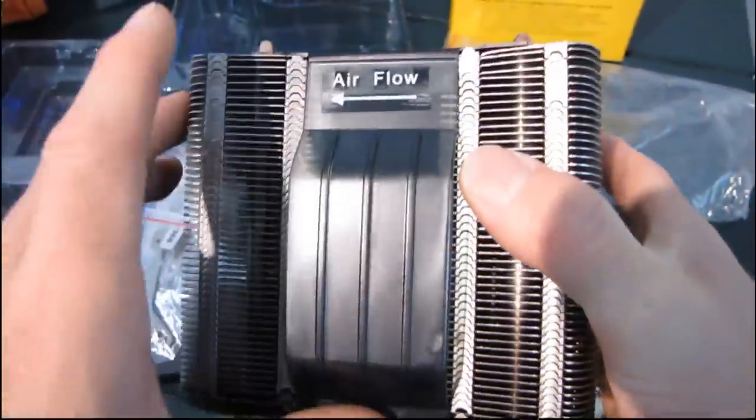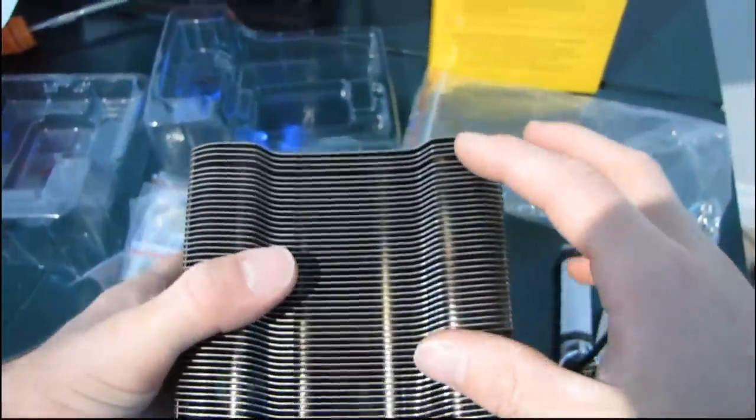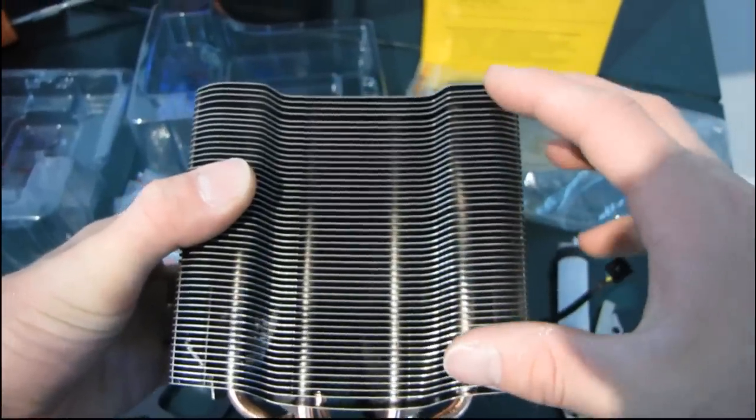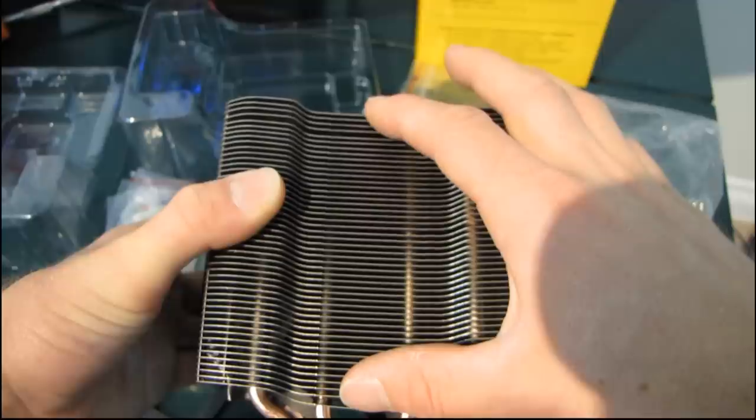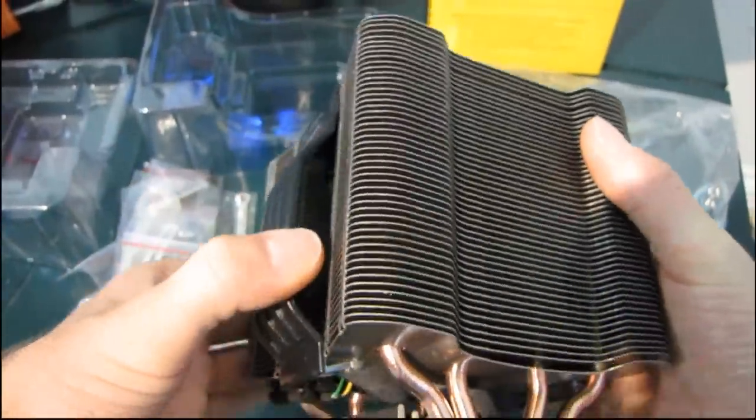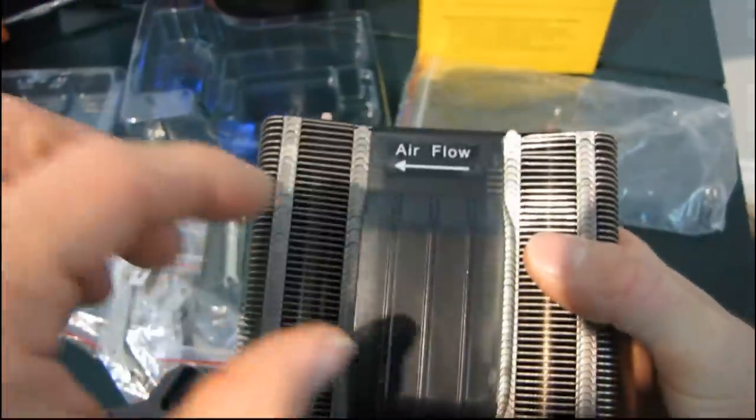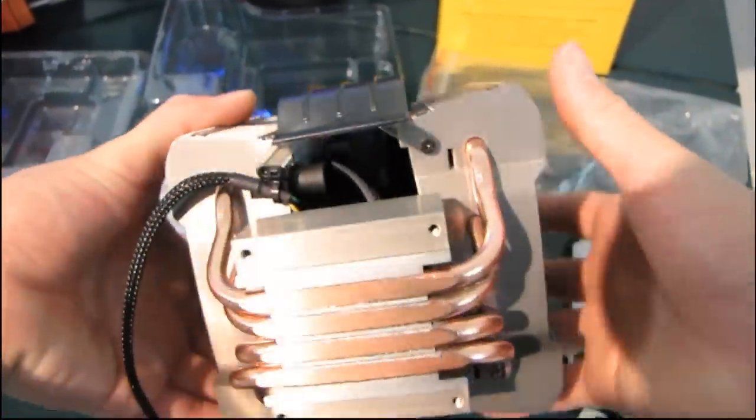They've kindly labeled the airflow for you on this one. So here we go. Let's have a look at the fins. First of all, the fins are what I would consider about a medium density. So they're not super tight, but they're also not super wide. So that means that you're going to have to have a fan that finds a good balance of static pressure to pure CFM in between.